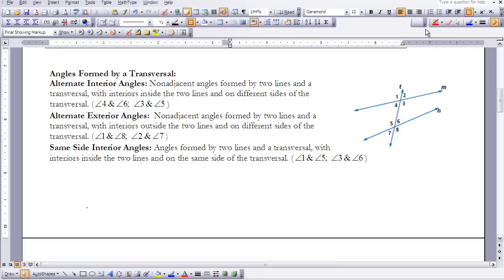and angle 5. They are on alternate sides of the transversal, and they are on the interior of my non-intersecting lines. Now let's go to the alternate exterior angles. They are on the exterior of my non-transversal lines, or non-intersecting lines. So 1 is going to match up with 8, and 2 is going to match up with 7. They are on alternating sides of the transversal, but on the exterior of the non-intersecting lines.